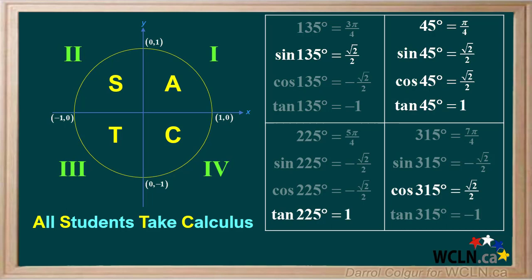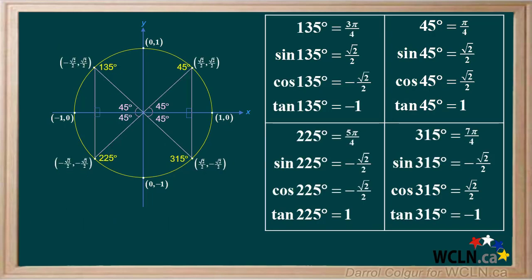It is very important to get the sign correct on all the quantities we calculate. Here's a quick summary of the four angles we looked at and their values — these angles all have a reference angle of 45 degrees. Make sure you know how to find all the values for these and which values are positive and which are negative.